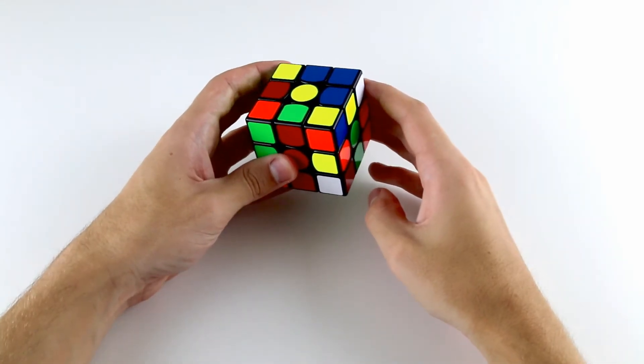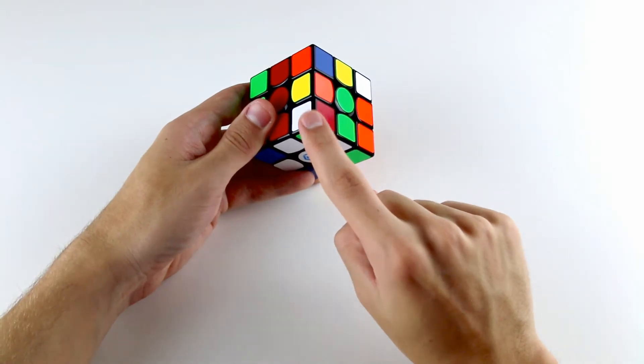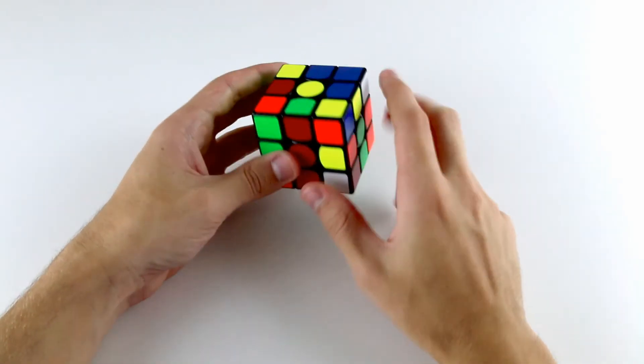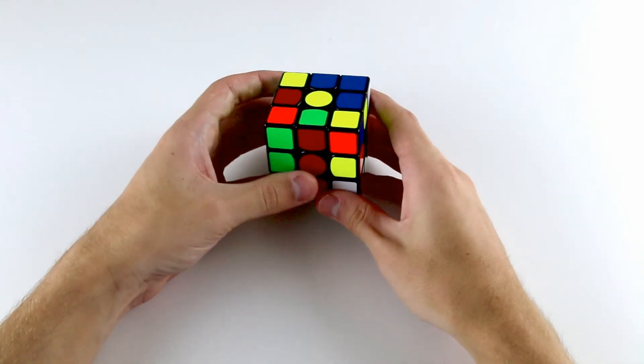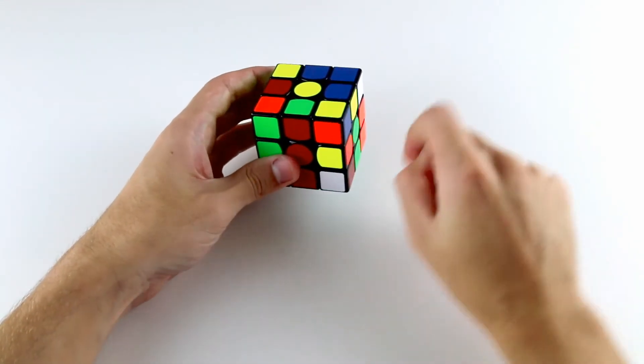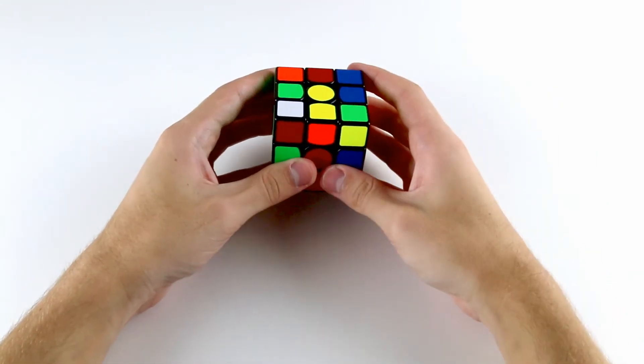So let's do another case where we'll solve the green and red F2L pair. We have the corner in its position, but it's incorrectly oriented down here, and we also have the edge up here. These are the two pieces that we want to solve. At the moment this corner is in the bottom layer, so we can bring it up into the top layer by doing R, U, R prime.